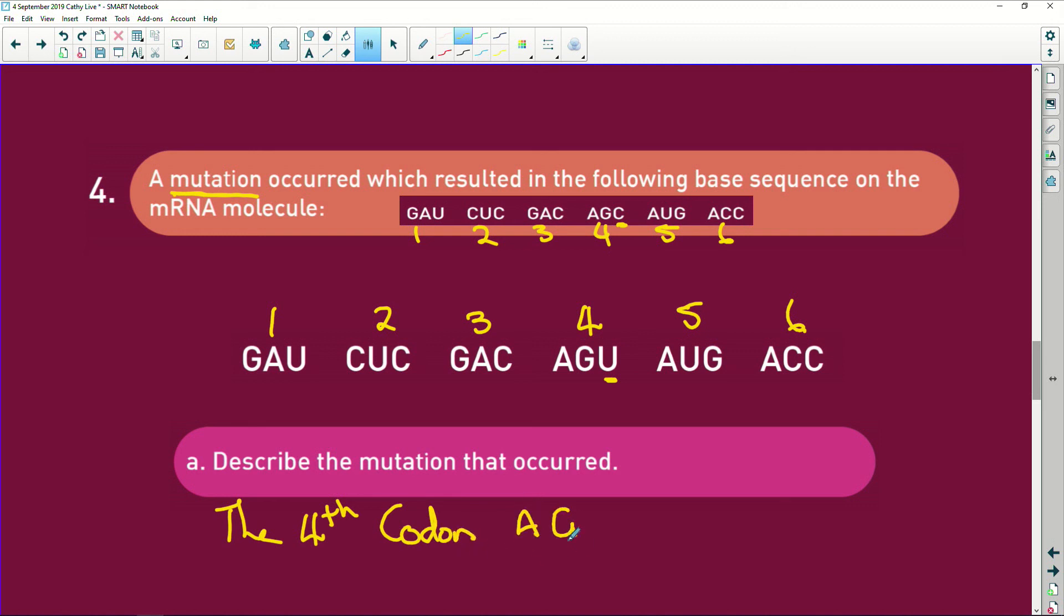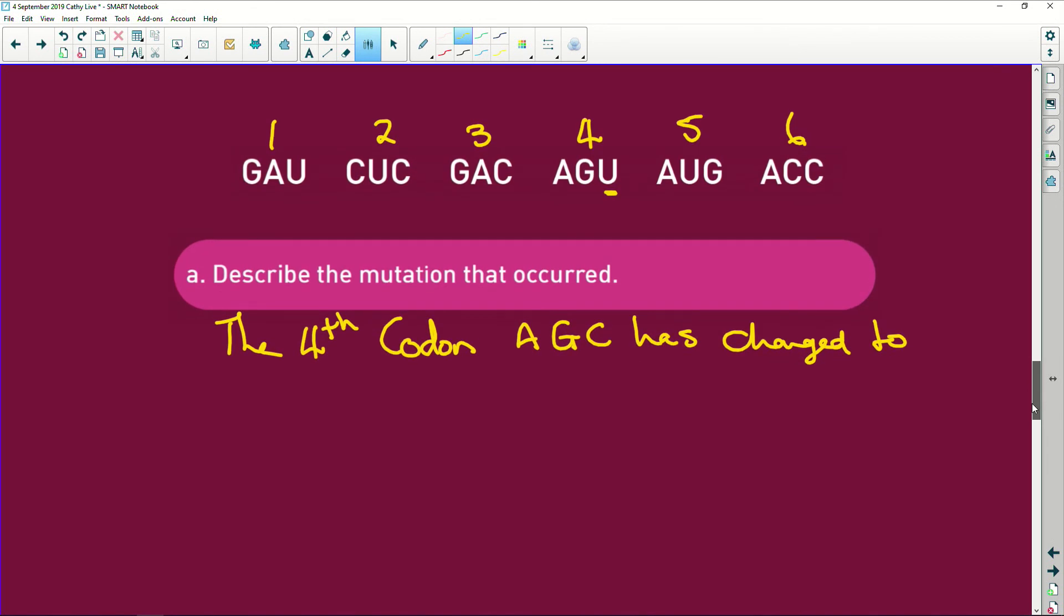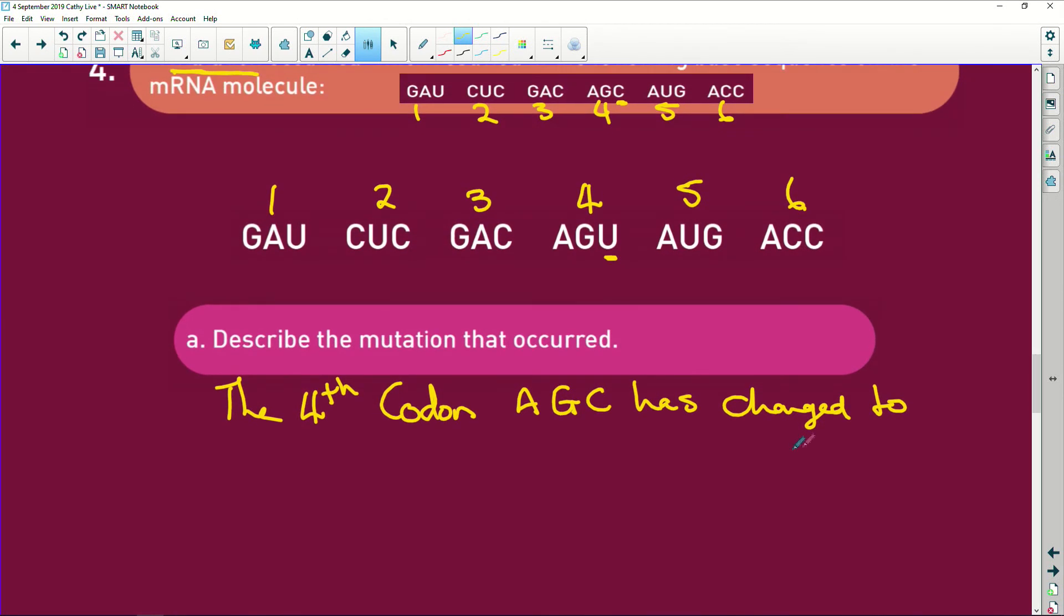It says describe the mutation that occurred. Well that's easy. The fourth codon, AGC, has changed to AGU. So the C is replaced with U.